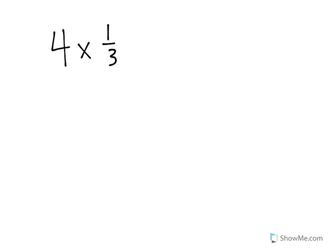What we're going to look at here is how multiplication and addition are related. Let's start with this multiplication problem at the top: 4 times 1 third. Now what this means is 4 groups of 1 third.